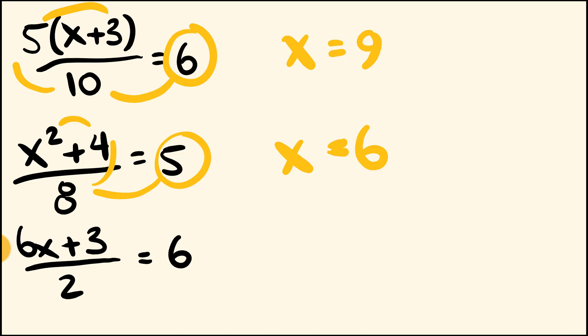Let's have a look at the final question here. We have 6x plus 3 over 2 equals 6. So once again, we're going to start at our 6 here and work our way backwards. First off, we're going to multiply by 2. Then we're going to subtract 3. Then we're going to divide by 6. Cool. So let's do that.